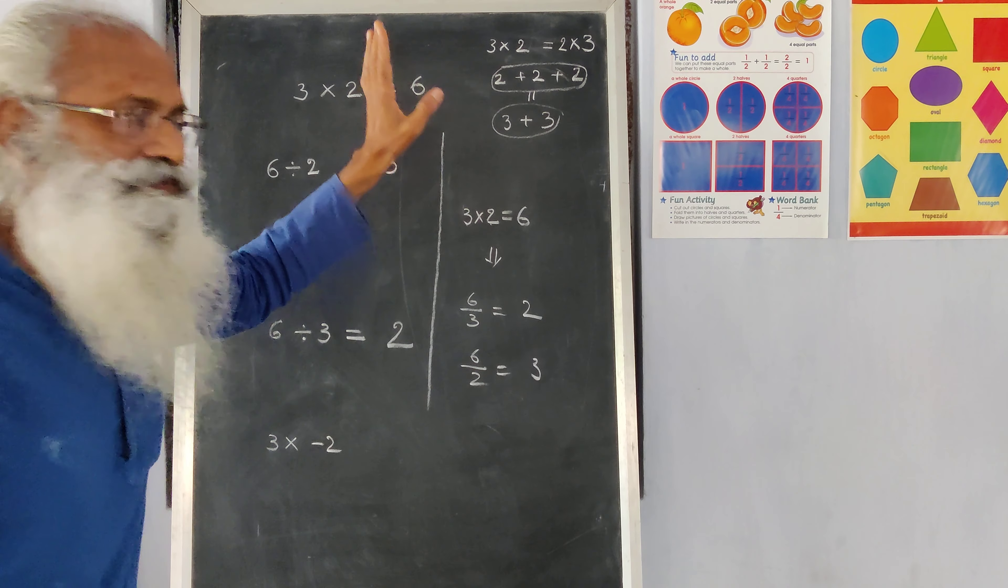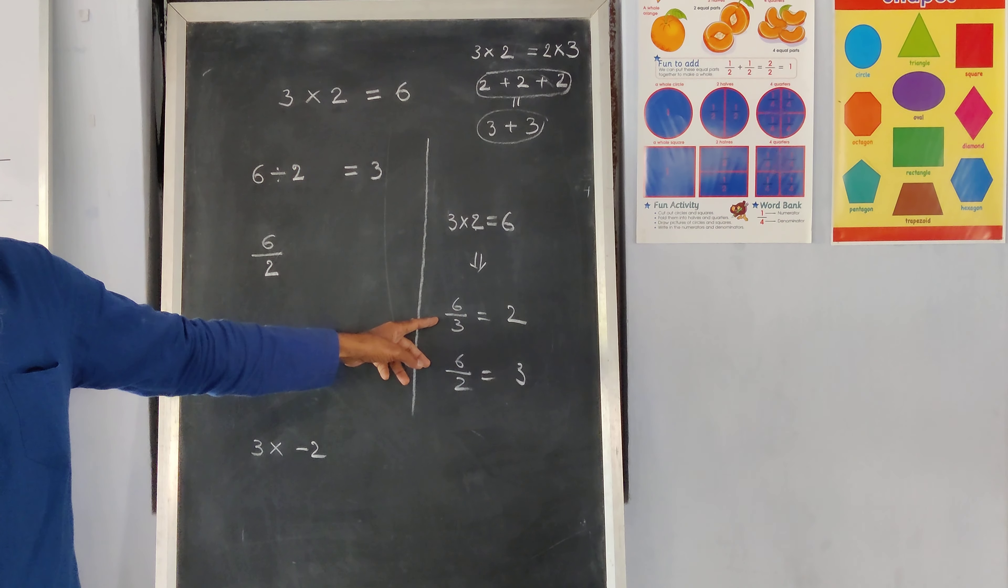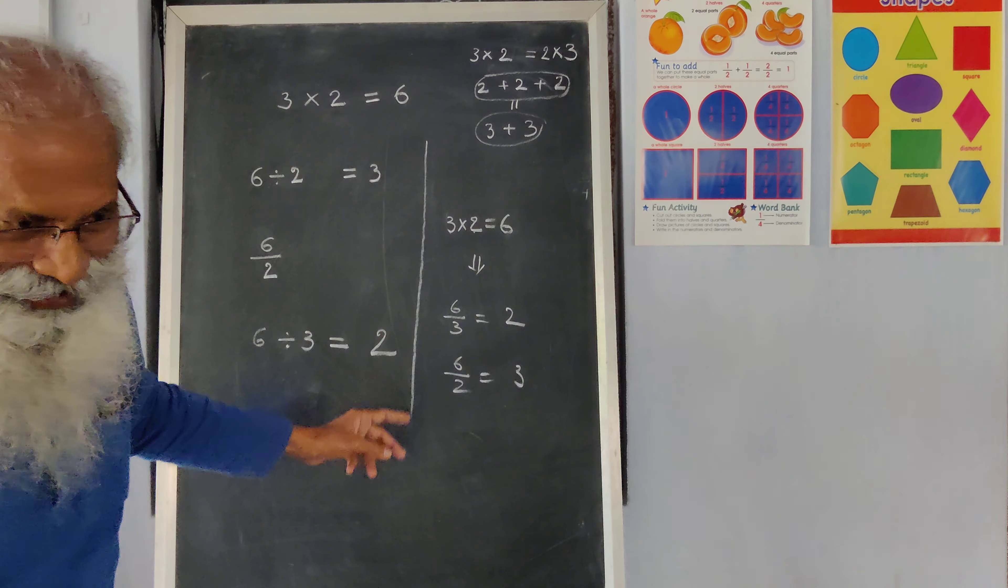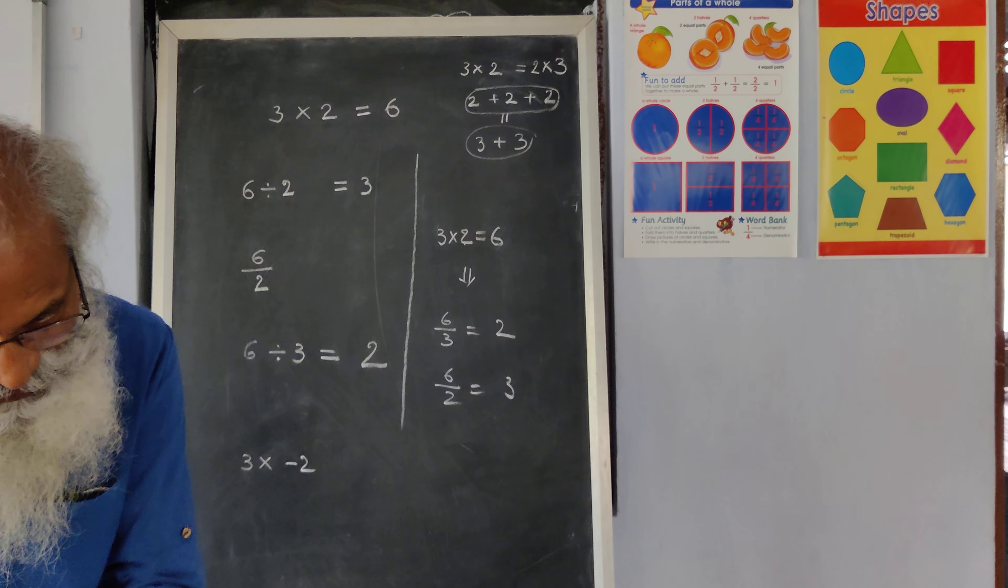So the moment you have one multiplication, you know the answers for two divisions. You have learnt only one multiplication, but you can work out two divisions.